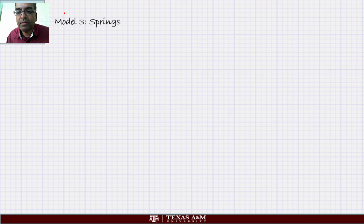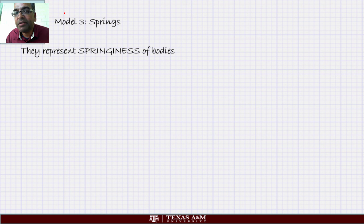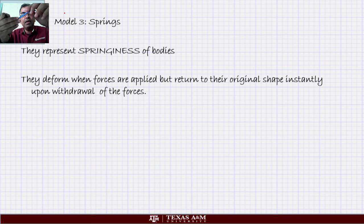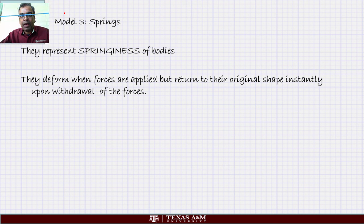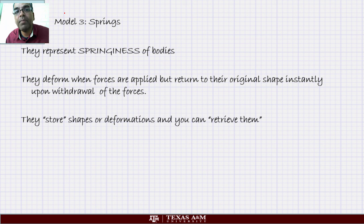Now let's look at the first kind of model, which is a spring. Don't think of it as a literal spring — it represents the springiness of bodies. What do we mean by springiness? These are bodies that will deform. Here is a springy body — it's not a rigid body because it's flexible — but it has an interesting property: if you pull it, it will deform, but if you let go it will come back to its original shape almost instantly. It always remembers one shape; it is able to store a shape and recover it.